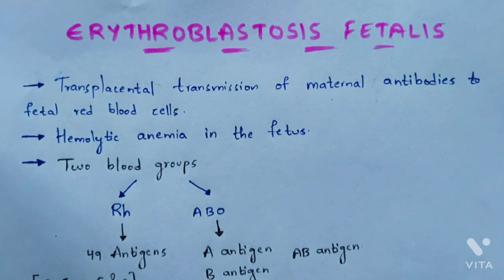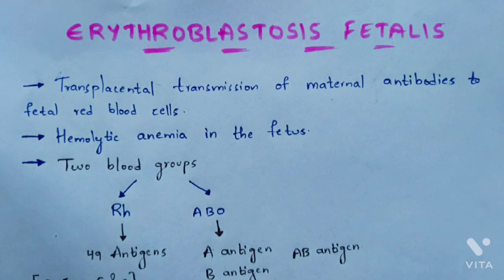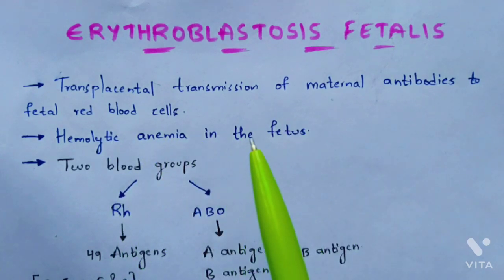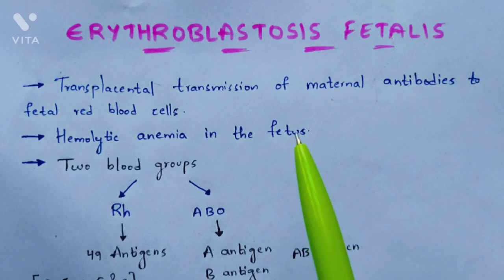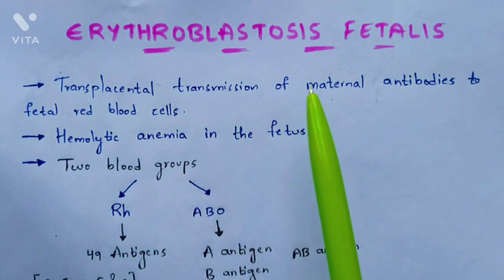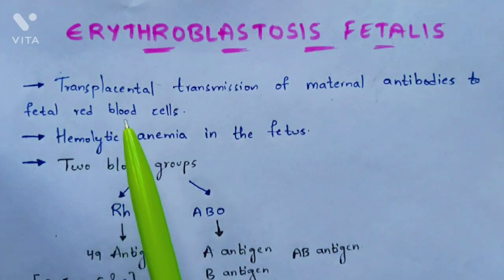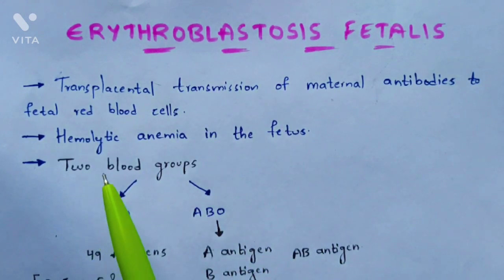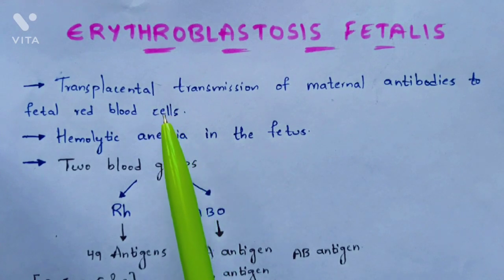Hi everyone, my name is Panindra. In this video I am going to explain erythroblastosis fetalis — both the theoretical part and the diagrammatic part. Let's start with the theoretical part so you can clearly understand the diagram. The definition: erythroblastosis fetalis is a disease seen in the fetus growing in the womb of a mother, where transplacental transmission of maternal antibodies to fetal red blood cells leads to hemolytic anemia in the fetus.